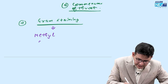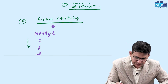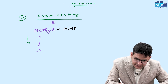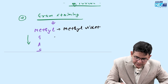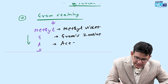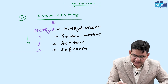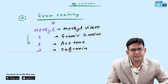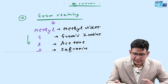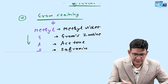One mnemonic to remember the gram staining sequence is METHYLGAS. The sequence for gram staining is: Methyl violet, Gram's iodine, Acetone, Saffronin. In exams, they jumble this sequence up — putting methyl violet and acetone in the wrong order. To remember the correct sequence, use the mnemonic METHYLGAS.